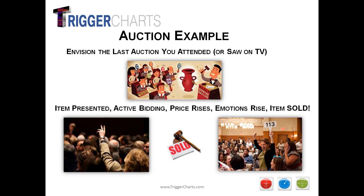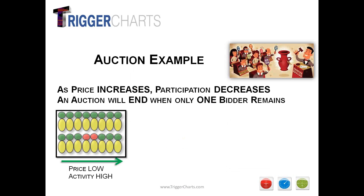Generally think about the last time you attended an auction or saw one on TV. We have an item presented, emotions are high, there's a crowd, bidding, price movement, price action, enthusiasm. And finally it reaches its final price and the auction item is sold. The auction is over, and at that point we move to a new auction. Try to relate these concepts with price and trades, and why indicators don't move markets, but why price, crowd, psychology, and emotions do — and how we can step outside those emotions.